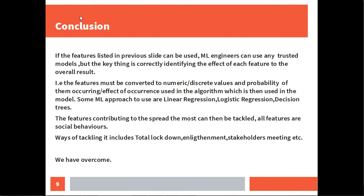In conclusion, if the features listed can be used, ML engineers can apply any trusted models. The key thing is to correctly identify the effect of each feature on the overall result — the features must be converted to numeric or distinct values, and the probability of their occurrence used in the algorithm, which is then used in the model. Some ML approaches I recommend are linear regression, logistic regression, and decision trees, though you can use others.